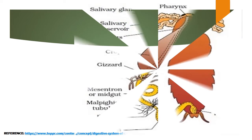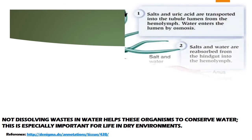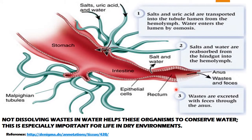This is the mesenteron and midgut, this is the colon, and these are the Malpighian tubules — the excretory organs. The hemolymph is present in the body cavity; it is an open-type circulatory system where blood is here in the body cavity. Salts and uric acid are transported into the tubules from the hemolymph.